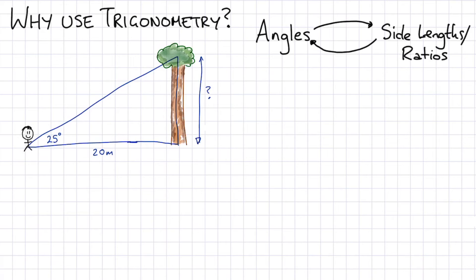First of all we might have this guy looking up at the top of the tree 25 degrees up and it's 20 meters to the base of the tree. We might use trigonometry to actually work out the height of the tree. We can see opposite and adjacent there and 25 degrees so we could use tan to help us work out the height of the tree.